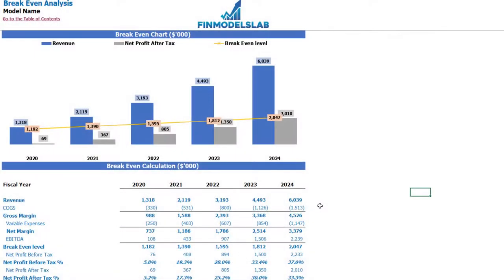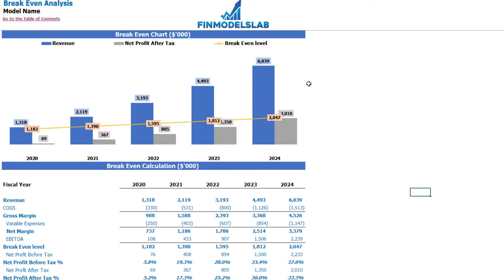On the break-even tab you may find the calculation of the revenue break-even level and a break-even chart. For this particular use case you may find that the revenue break-even level is less than the actual revenue calculation, which means the company is profitable.